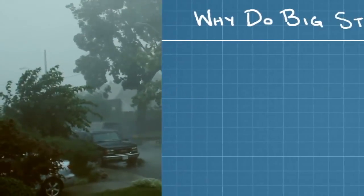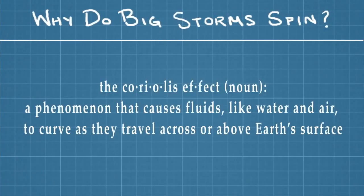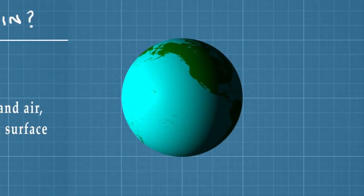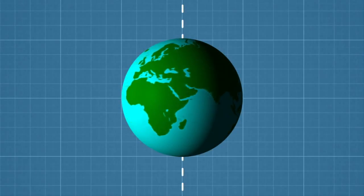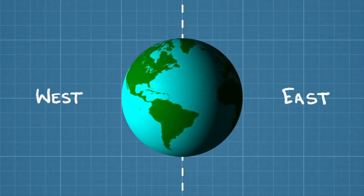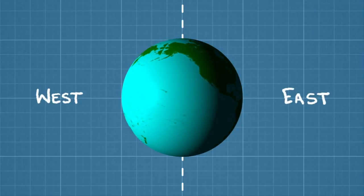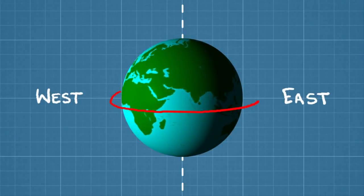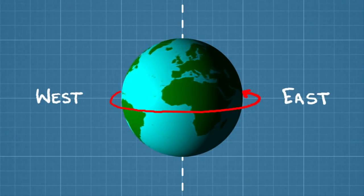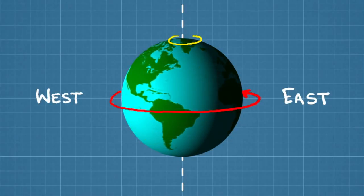A storm's rotation is due to something called the Coriolis effect, which is a phenomenon that causes fluids like water and air to curve as they travel across or above Earth's surface. Earth is constantly spinning around its axis from west to east. But because Earth is a sphere and wider in the middle, points on the equator are actually spinning faster around the axis than points near the poles.